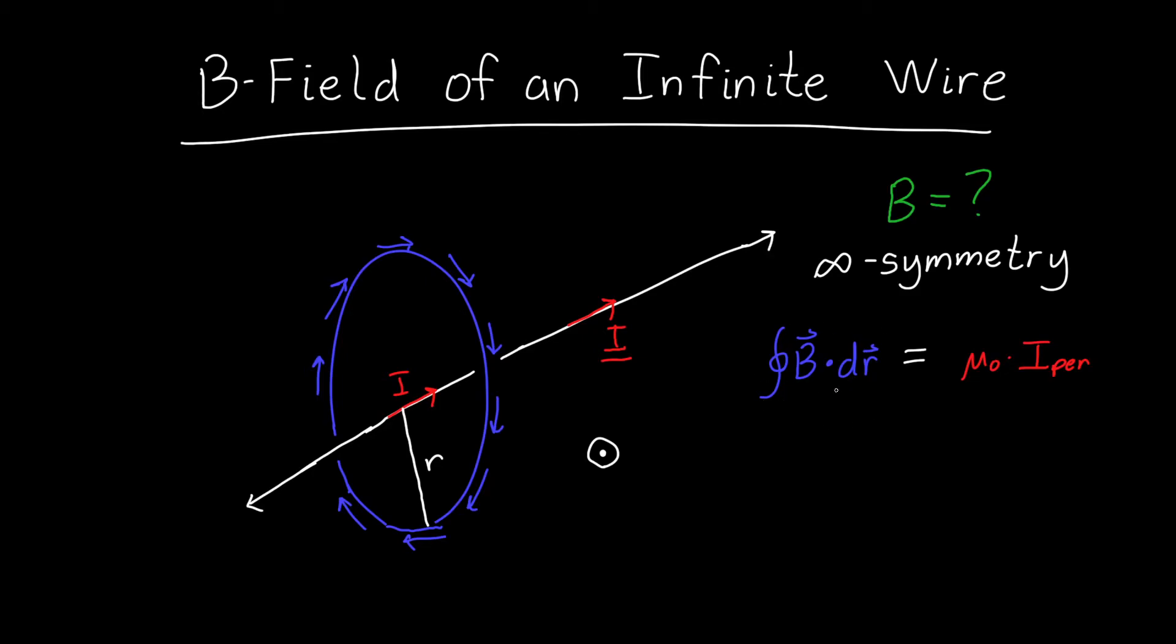We could start with either side of Ampere's law. Let's start with the left hand side. So first we need to figure out B·dr. Now, dr, in its most general form, if we're working in cylindrical coordinates, is r hat times dr plus phi hat times r d phi plus z hat times dz.